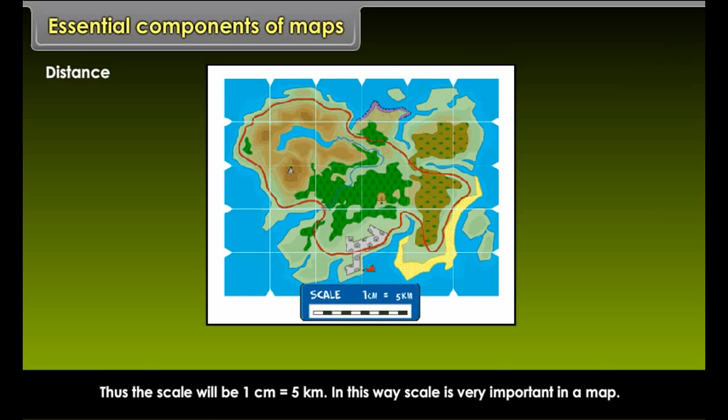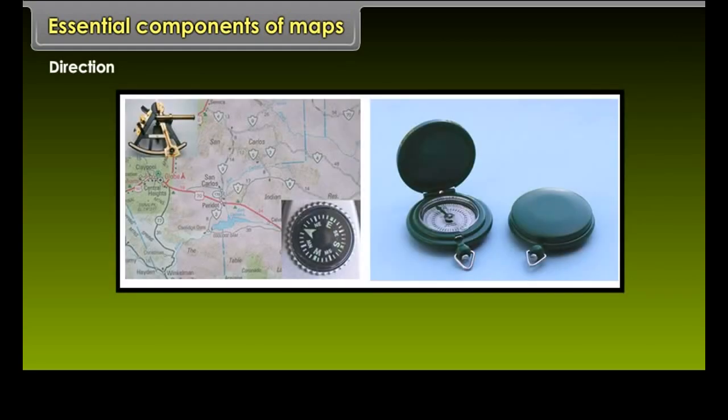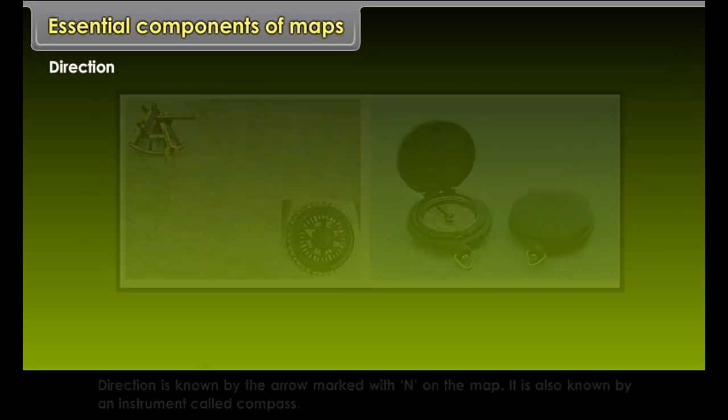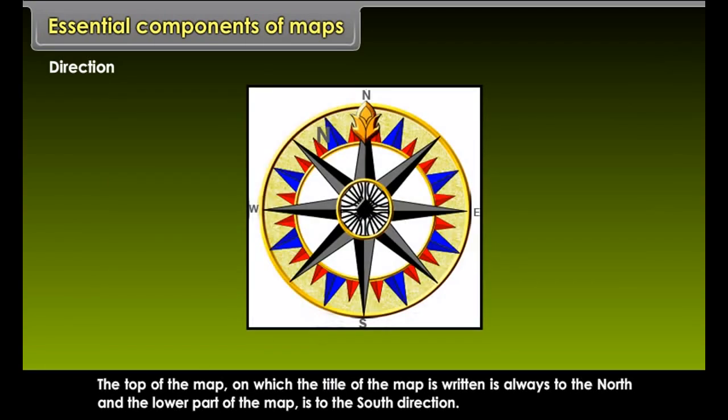For example, the distance between school and home of a student is 10 km. If he shows this 10 km distance by 2 cm on a map, it means 1 cm on the map will show 5 km on the ground. Thus, the scale will be 1 cm equals 5 km. In this way, scale is very important in a map.